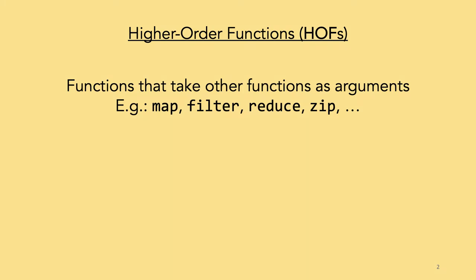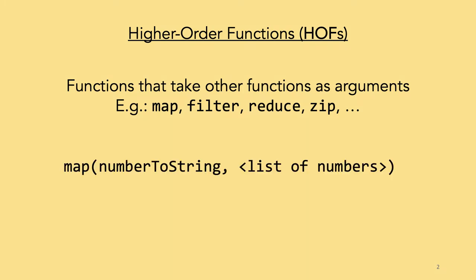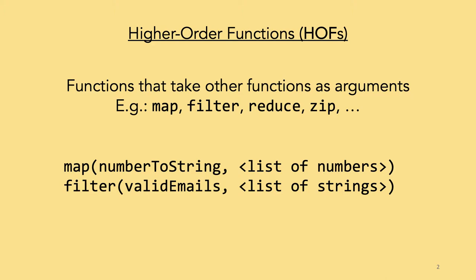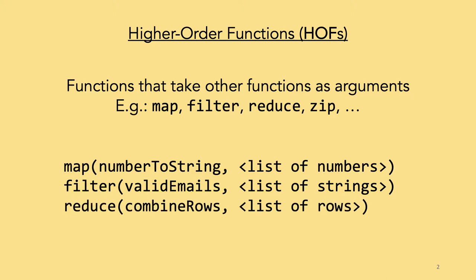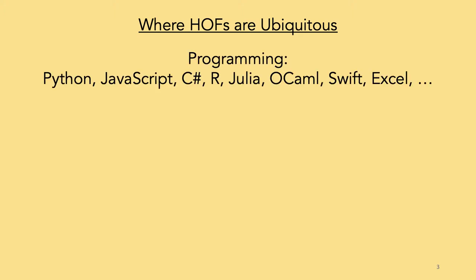For instance, we can map a list of numbers to get a list of strings, filter valid email addresses, or combine rows to make tables. Higher order functions are ubiquitous in programming. Every modern language has them, some even brag about it.